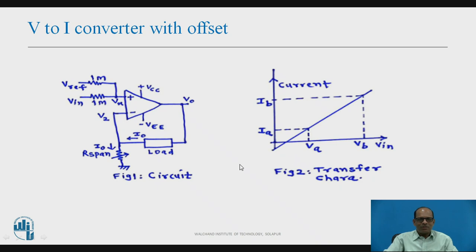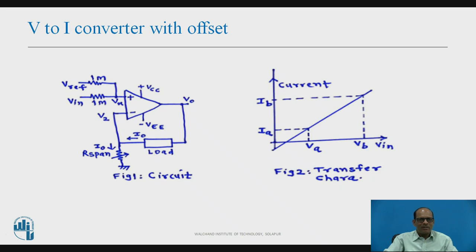This is the transfer curve for the V to I converter with offset. From the transfer curve, we see that if input voltage is φ_A, the load current is I_A, and similarly when input voltage is φ_B, load current is I_B. From this transfer curve, we see that when the input voltage is 0, the load current is not 0 — this is the offset. Due to this offset, we say this is a V to I converter with offset. The offset depends on φ_reference.